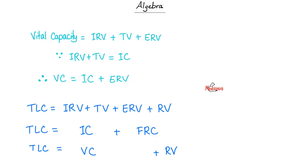Now, let's see if you are good at algebra. Vital capacity, as you know, is the first three volumes: inspiratory reserve volume plus tidal volume plus expiratory reserve volume. Since inspiratory reserve volume plus tidal volume is called the inspiratory capacity, you can argue that the vital capacity is the inspiratory capacity plus the expiratory reserve volume. Since these three are called vital capacity, you can argue that the total lung capacity equals vital capacity plus residual volume.